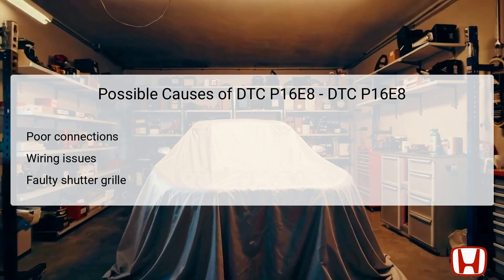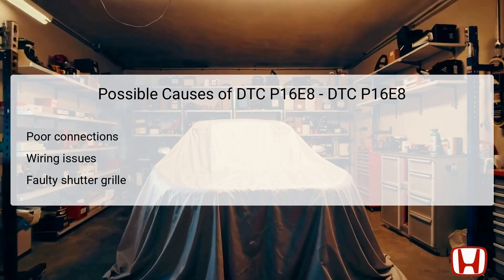Wiring issues, such as shorts or breaks in the LIN communication wire, may also lead to this error, as the correct signals cannot be sent to or received from the shutter grille. Furthermore, a faulty shutter grille itself may contribute to this error. If the grille fails to operate or communicates incorrectly with the PCM, the overall system will experience disruptions that trigger this diagnostic trouble code. Each of these causes must be systematically evaluated to ensure effective troubleshooting and resolution of the communication issue.